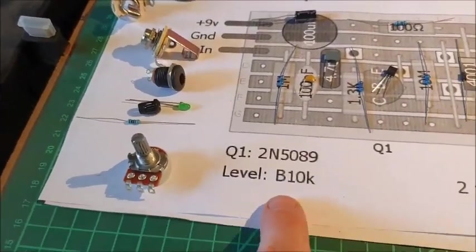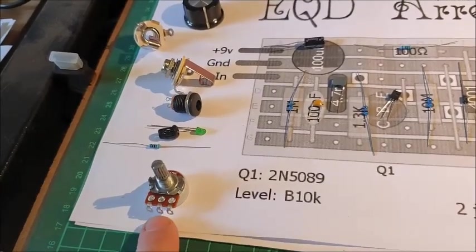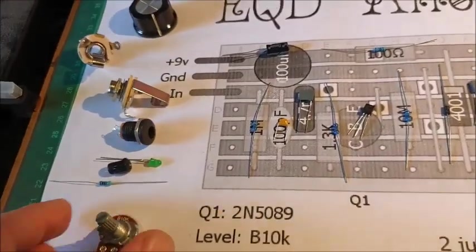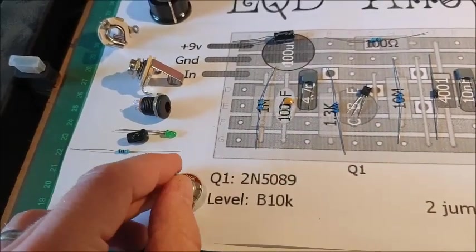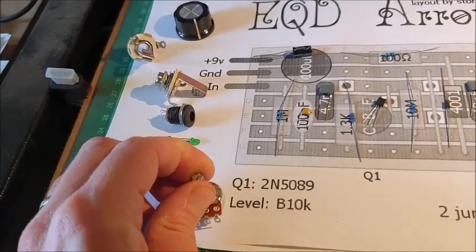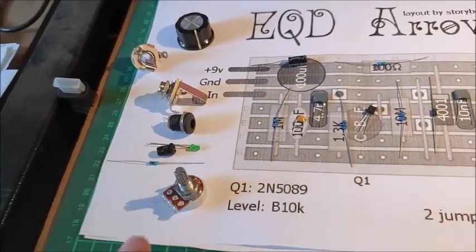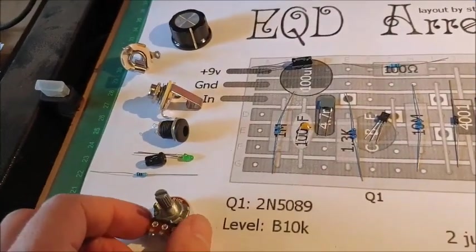So we've got our. 10K. B. Potentiometer. Which is our level. Shows how loud it goes. B just. Determines a taper. So that means that. Because it's a B. It's. A linear taper. So. It. When we turn it around. It just. Has a smooth. Incline. Logarithmic. Has kind of a different one. But we won't go into that now.